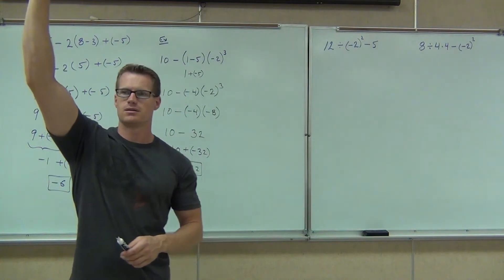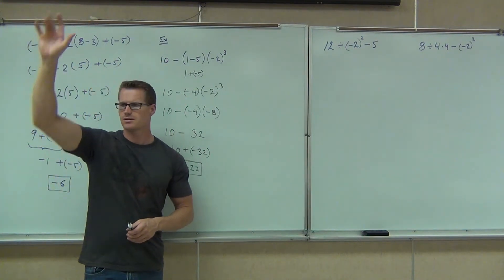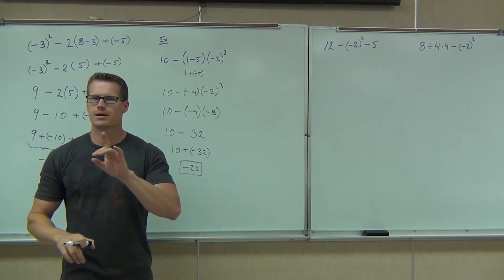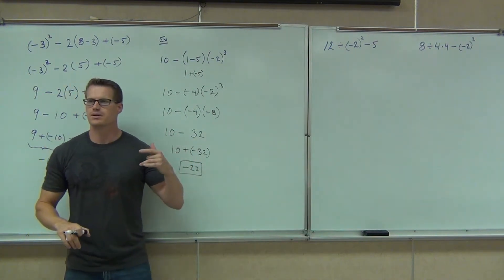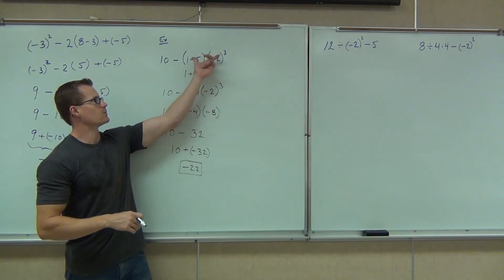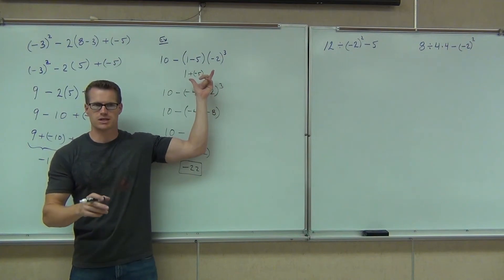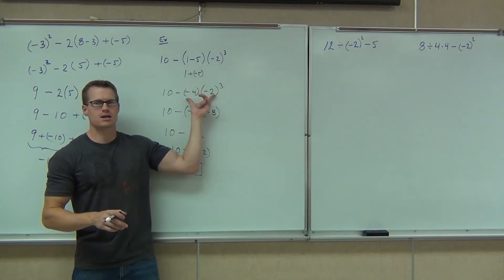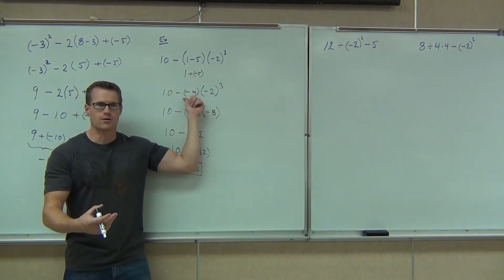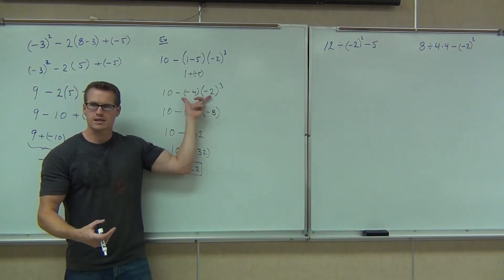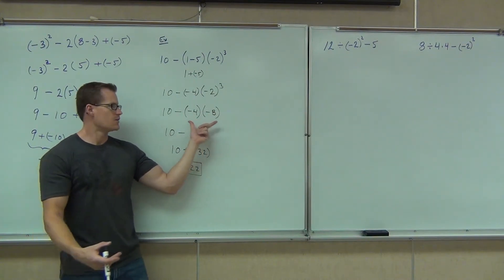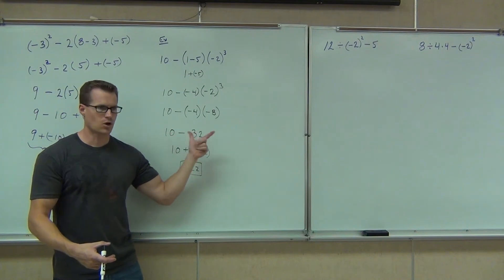Show of hands — how many got that? Good for you guys, that's fantastic. And if you didn't, I need you to know where your mistake came from. If it was from here, get your eyes on the board right now. If your mistake came from right here, you're still having trouble changing a minus to a plus negative. If your mistake came from right here, you're mistakenly doing your addition rule. If you got this wrong, your exponents are off. If you got this wrong, that's multiplication — you need to work on that.